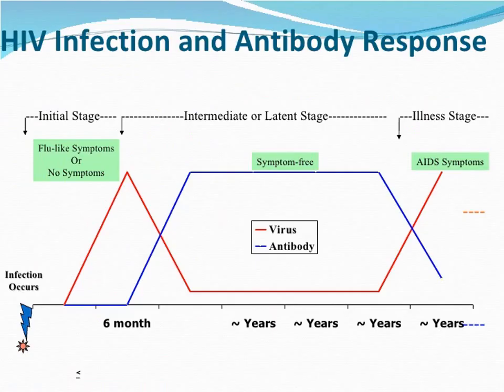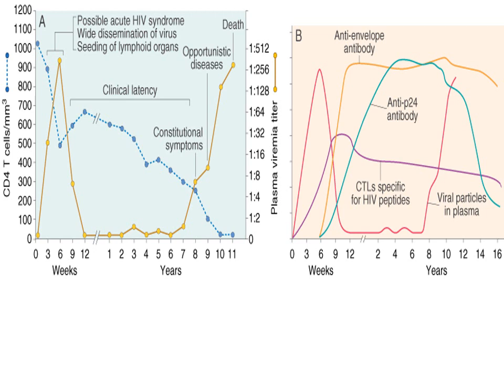HIV infection and antibody response: in initial stages there are flu-like symptoms or no symptoms, typically appearing two to three weeks after infection. Then there is an intermediate or latent stage which is symptom-free, in which the virus keeps multiplying, resulting in destruction of T lymphocytes, while antibodies form against the viruses. This latent stage lasts for many years, then leads to full-blown illness due to an immunocompromised state and progressive loss of T lymphocytes.